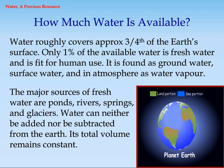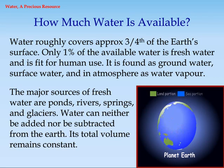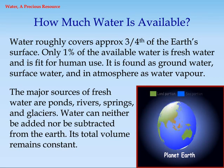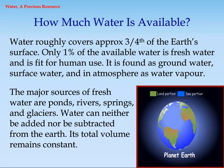The major sources of fresh water are ponds, rivers, springs, and glaciers. Water can neither be added nor be subtracted from the earth. Its total volume remains constant.